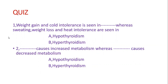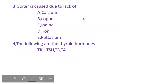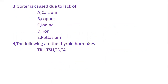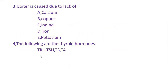Let me read out the questions. Question one: weight gain and cold intolerance is seen in which condition? Question two: which condition causes increased metabolism, and which causes decreased metabolism? Question three: what condition is caused due to the lack of calcium, copper, iodine, iron, or potassium? Question four: the following are the thyroid hormones — TRH, TSH, T3, and T4. These are the four questions and I'm looking forward to your answers. Thank you.